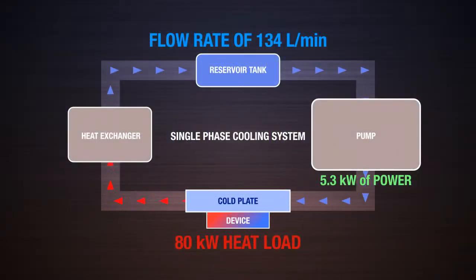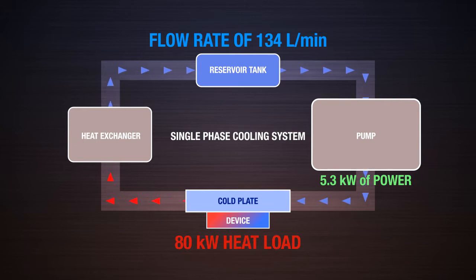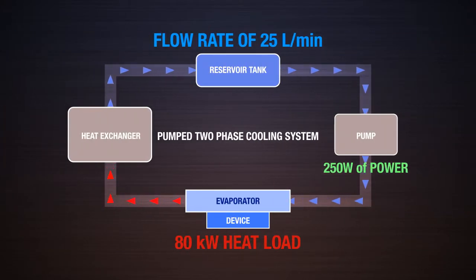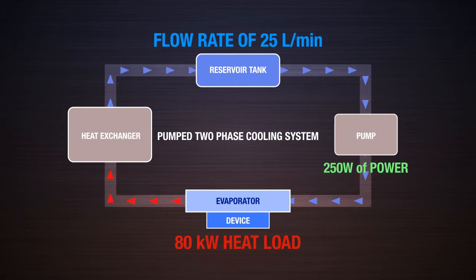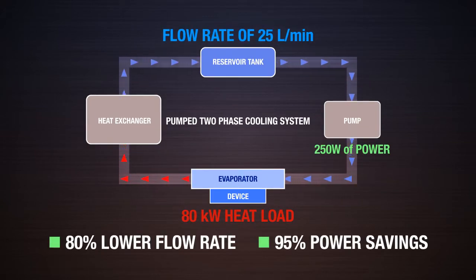This is important for applications that must be compact and operate with minimal power. In terms of weight and power savings, we've shown that for an 80 kilowatt heat load, a pumped liquid system would require a pump that utilizes 5.3 kilowatts of power and a flow rate of 134 liters per minute to remove the waste heat. By contrast, a pumped two-phase system would require pumping power of only 250 watts with a flow rate of 25 liters per minute — an 80% reduction in flow rate and a 95% reduction in power.